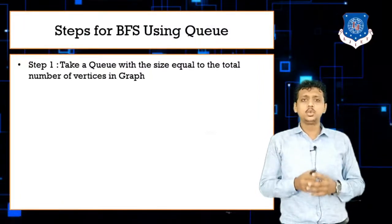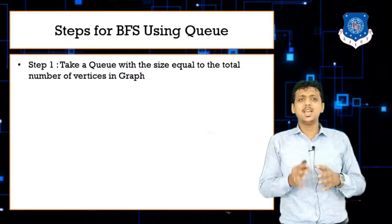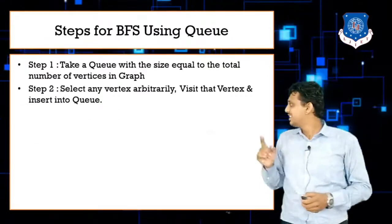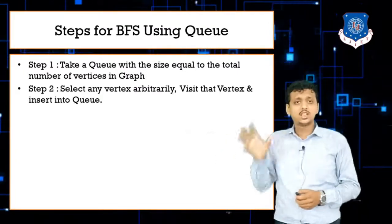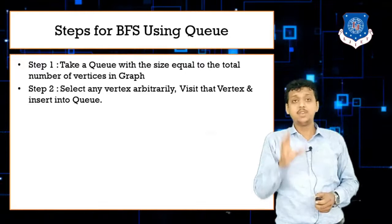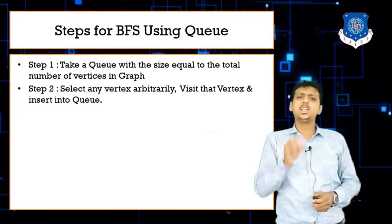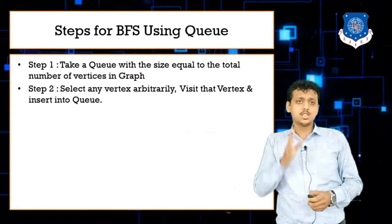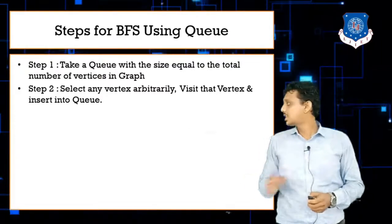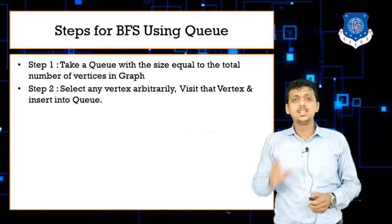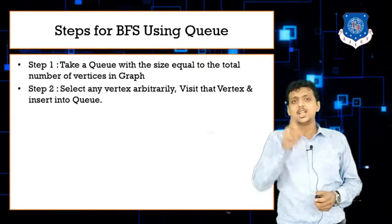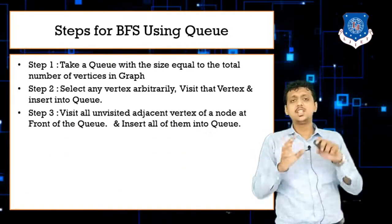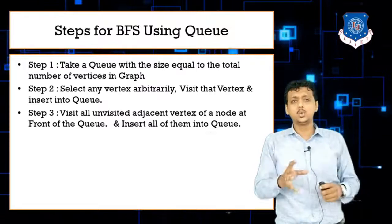Step one: create a queue with size equal to the number of nodes in the graph. Step two: select any vertex from the graph in arbitrary order — whenever you apply DFS, BFS, or similar algorithms on a graph, always proceed in arbitrary order. Select that node, visit it, and insert it into the queue.